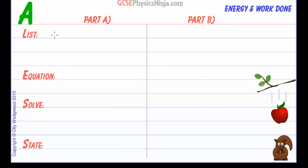So for part A we're looking for the gravitational potential energy. Let's just pop that in our list of data. We'll call that EP for energy potential or potential energy, and in this case we want to find that in joules. We know that the mass of the apple is 0.2 kilograms.